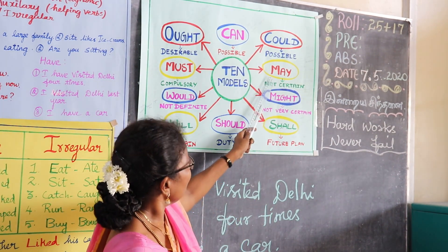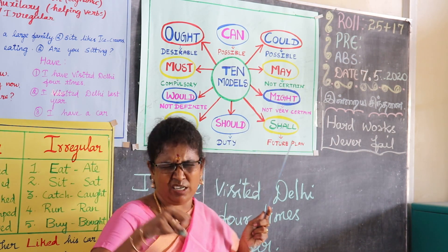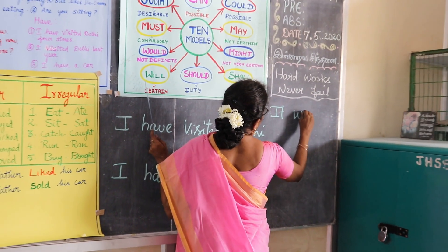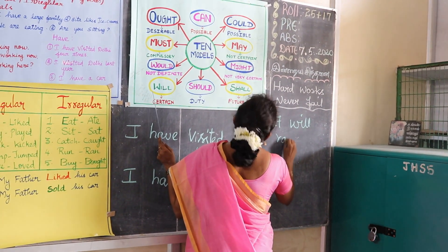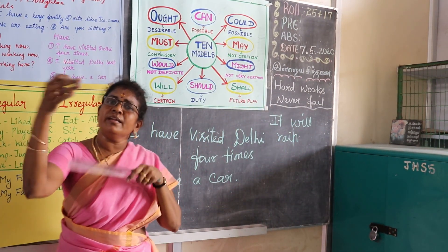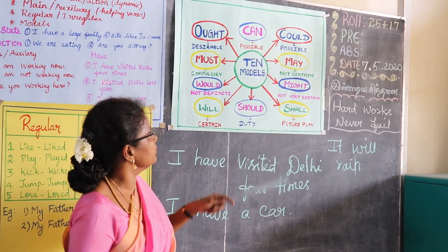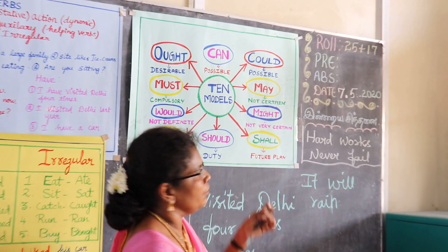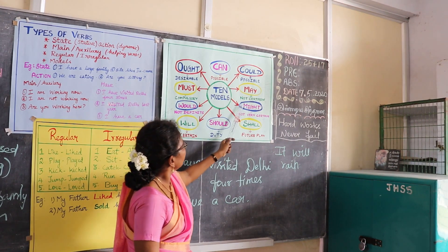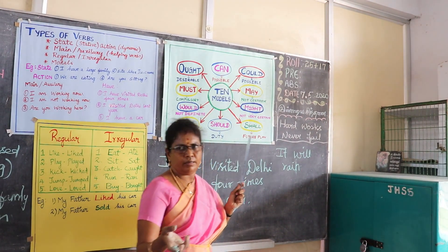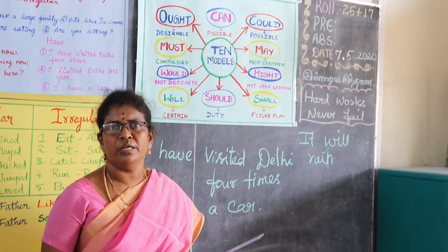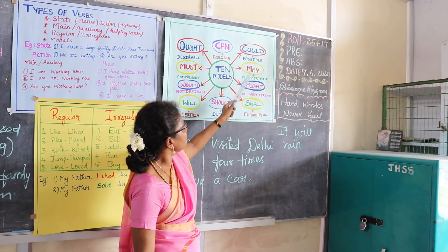May expresses something not certain — not definite. For example: 'It will rain' is definite, but 'It may rain' is not definite. May shows permission, possibility, and wishes. Examples: 'It may rain' — possibility; 'May God bless you' — a wish; 'May I come in?' — permission.